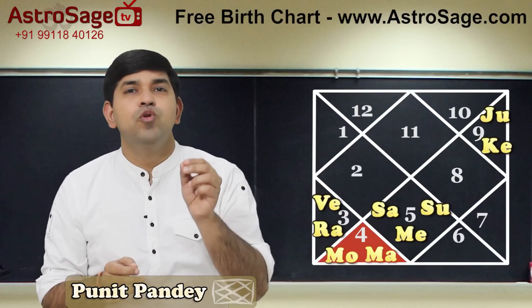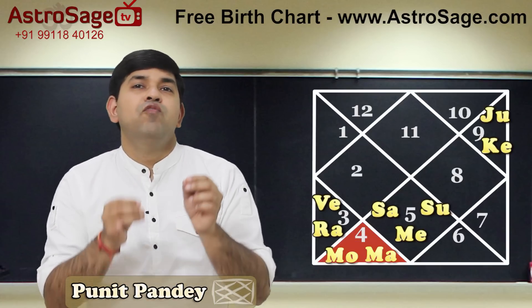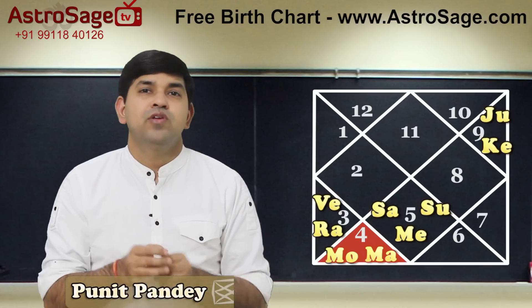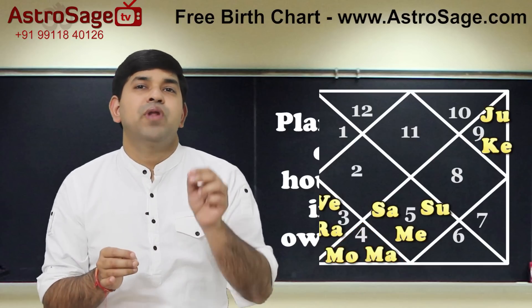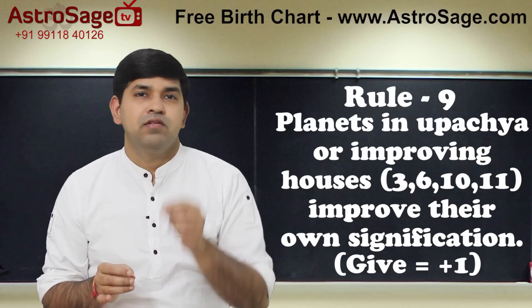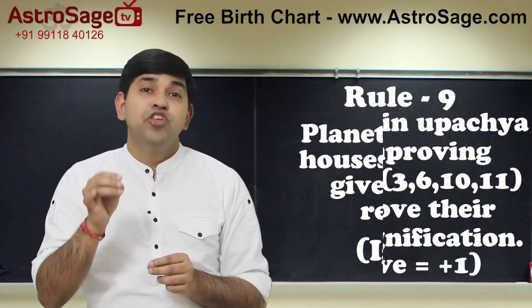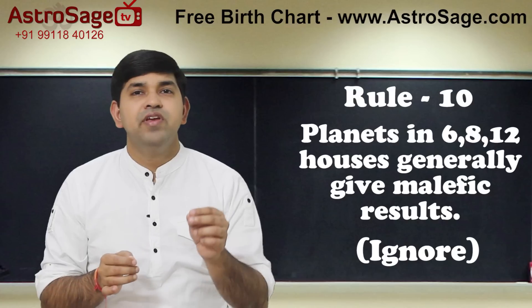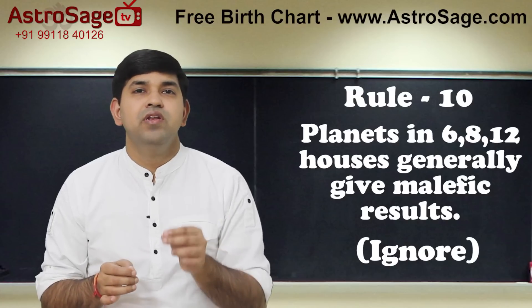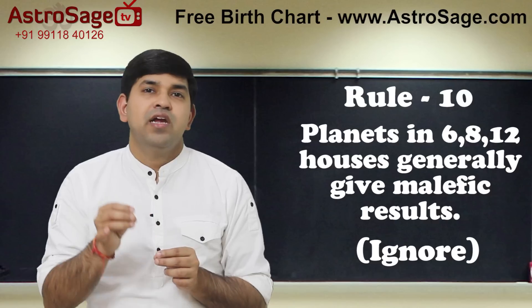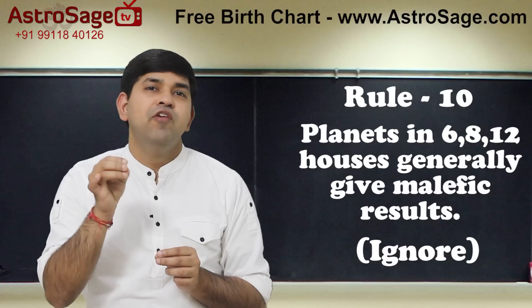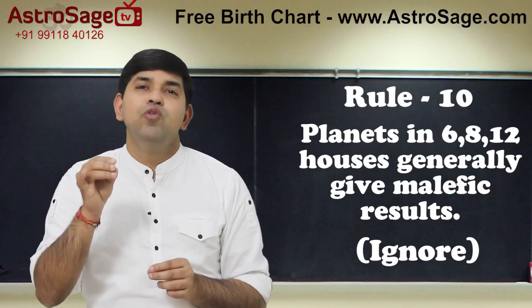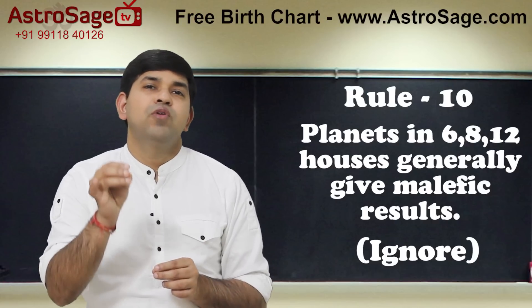An upachaya house is a good placement for any malefic planet including Mars, so plus 1 for rule number 9. The sixth house is generally bad, but malefic planets are an exception in upachaya, and we have already given plus 1 earlier, so ignore rule number 10.